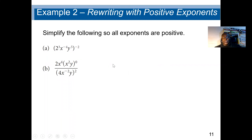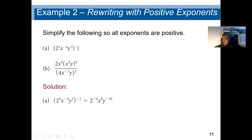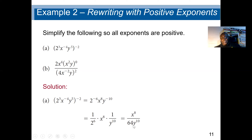Simplify the following so all exponents are positive. We have a negative outer exponent, so we find the reciprocal. First, multiply negative 2 by every inner exponent: negative 2 times 3 gives negative 6; negative 2 times negative 4 gives positive 8; negative 2 times 5 gives negative 10. Then taking the reciprocal, we get x to the power 8 divided by 64 y to the power 10, since 2 to the power 6 is 64.